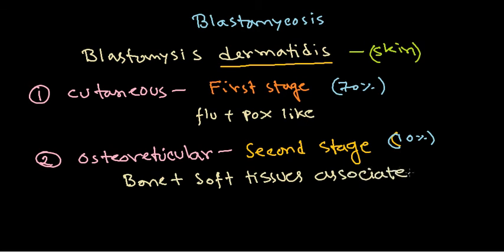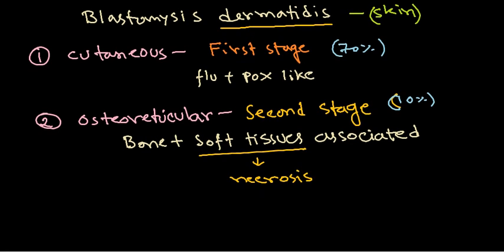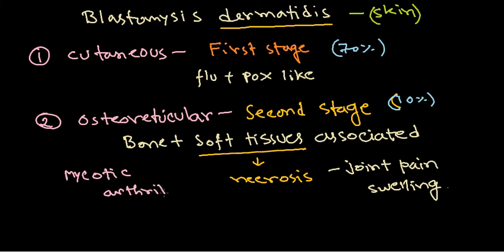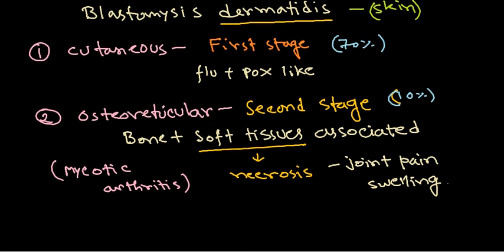As a result of soft tissue attack and damage, tissue necrosis can be seen. Swelling of the joint, joint pain, and inflammation result in this particular situation. This condition is termed mycotic arthritis caused by blastomycosis—that's the second stage.